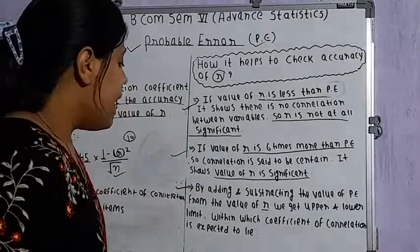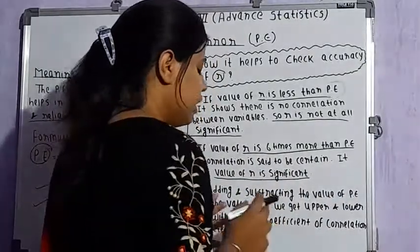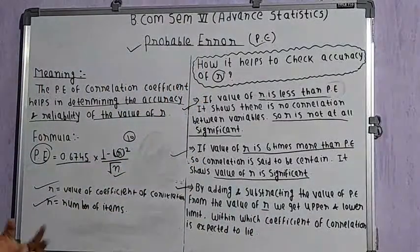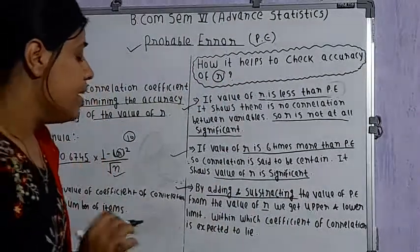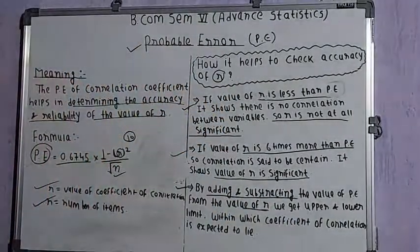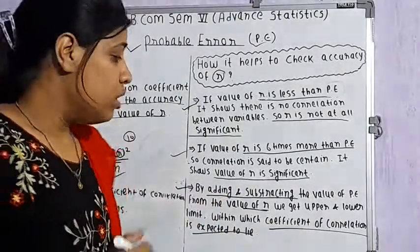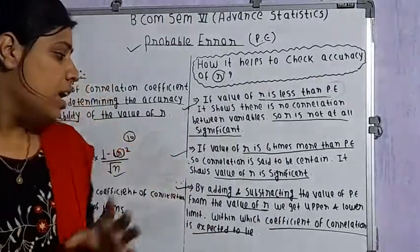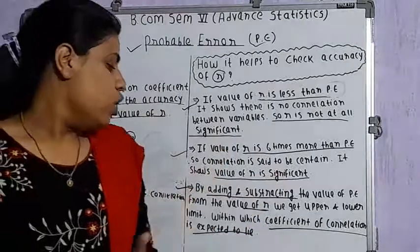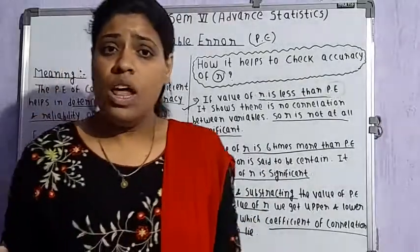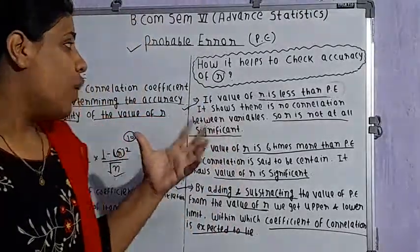Another application is that by adding and subtracting the value of probable error from the value of R, we get the upper and lower limits within which the coefficient of correlation is expected to lie. So this probable error is also used to calculate those upper and lower limits, and this is how the tool of probable error helps us to check the accuracy of the value of R.